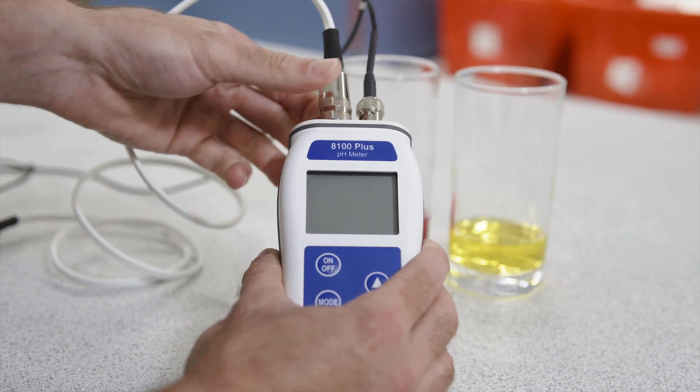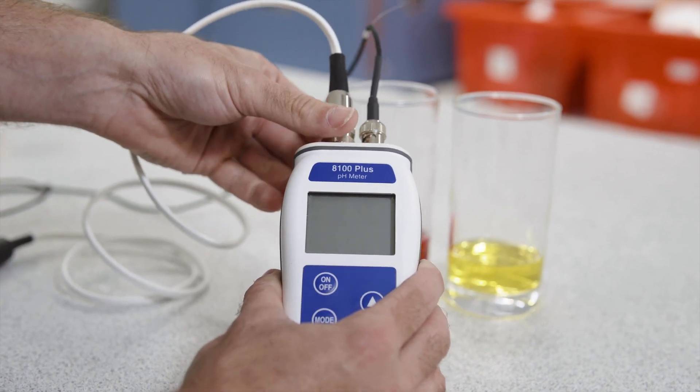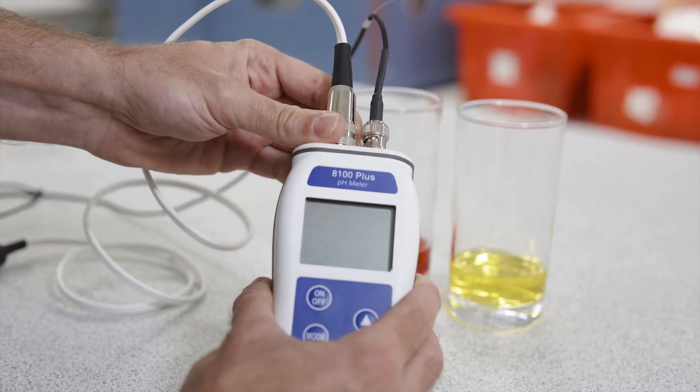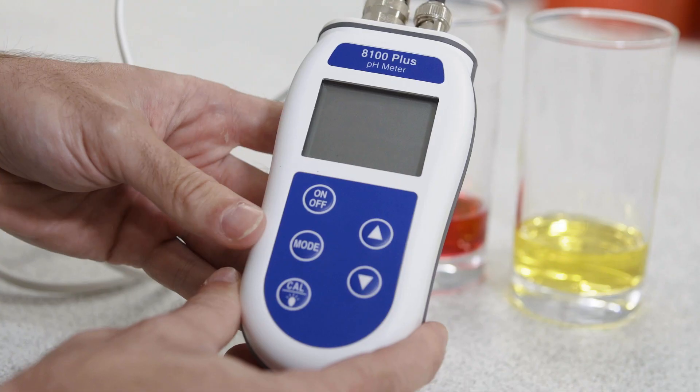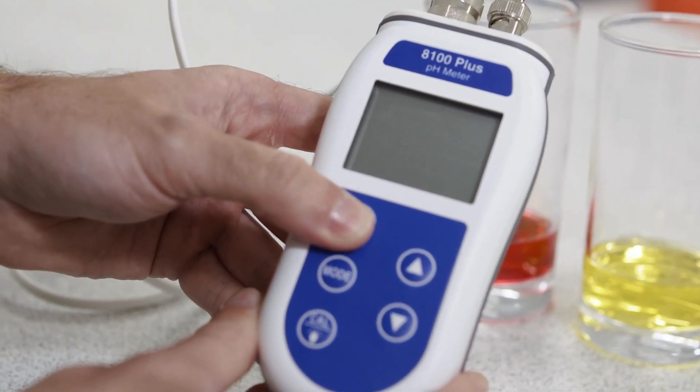If you are not using a temperature probe, you will need to manually adjust the temperature using the up and down arrows. Turn the unit on by pressing the on-off button.